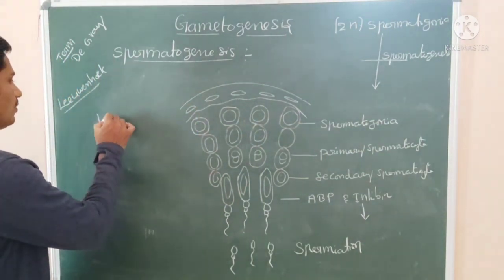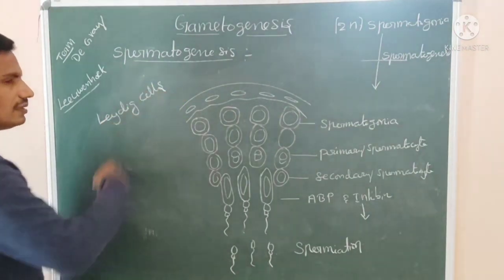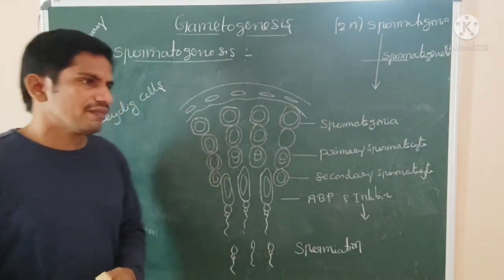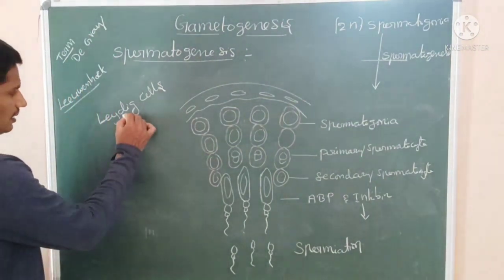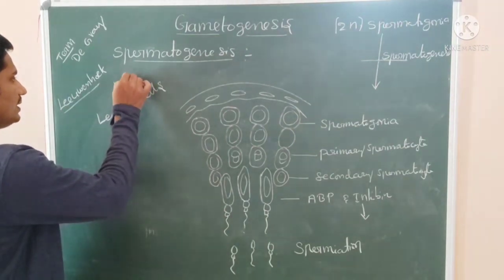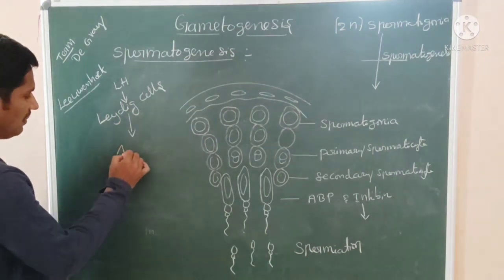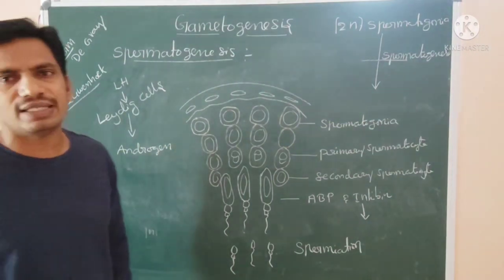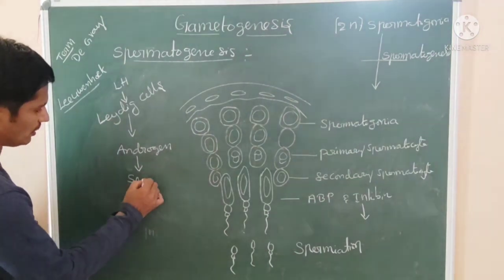There are also interstitial cells known as Leydig cells. Leydig cells were discovered by Leydig. Luteinizing hormone acts on the Leydig cells and can stimulate the secretion of the primary androgen, which is testosterone. Testosterone also encourages spermatogenesis.